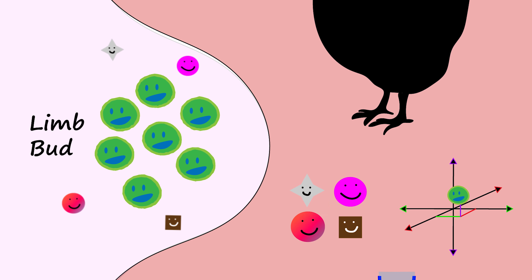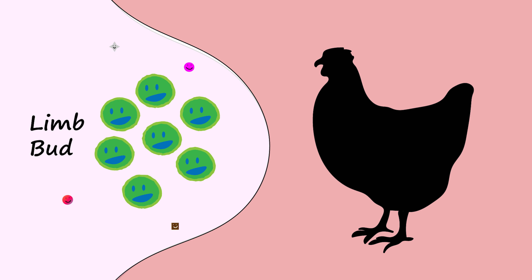Studies on chicken embryos have shown us the most important molecules, where they are found, and which axes they control.